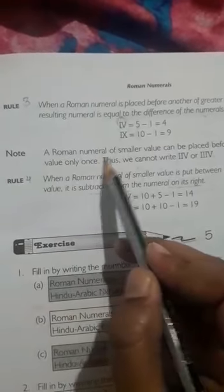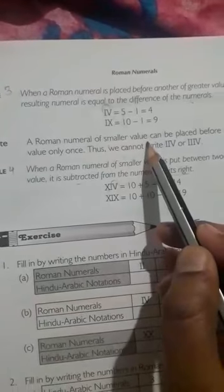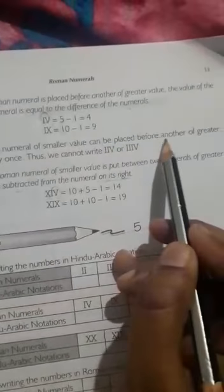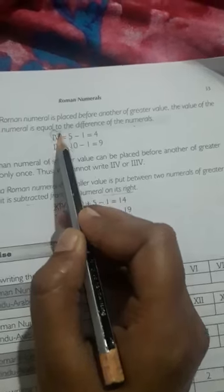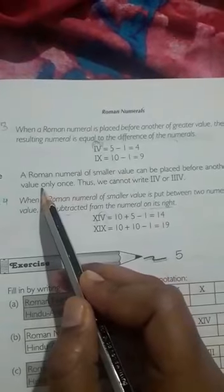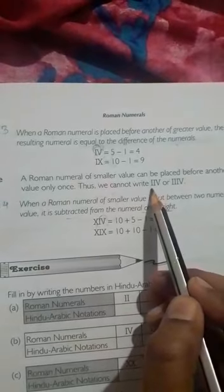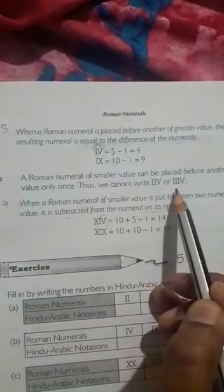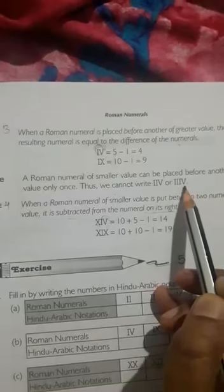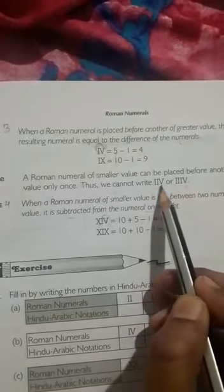Note: A Roman numeral of smaller value can be placed before another of greater value only once. We cannot write IIV or IIIV.